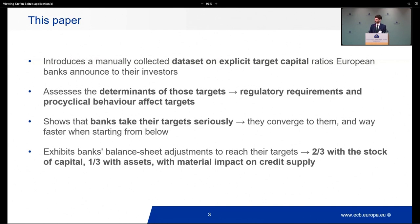Next, I show that banks do take their targets seriously — it's not just something they announce to investors and don't care about. They converge toward their targets over time, but the convergence rate is much higher when they are initially below their targets. This suggests that reaching a certain level of solvency is a primary concern for investors, while when banks are above their targets, they simply distribute capital to investors more slowly, probably because investors know the capital is there and can be distributed later. I also explore how banks converge: two-thirds of the adjustment occurs through capital — increasing their outstanding amount — while one-third occurs through assets, which has an important impact on corporate credit supply.